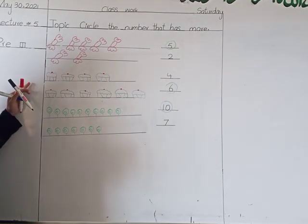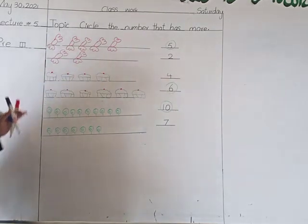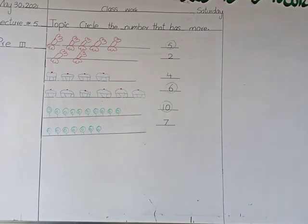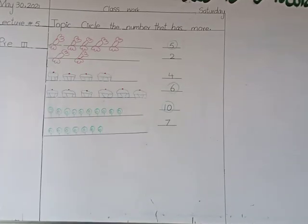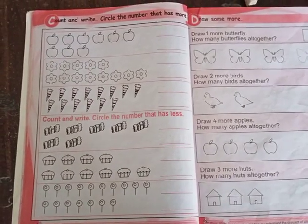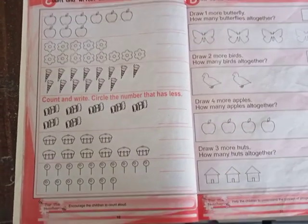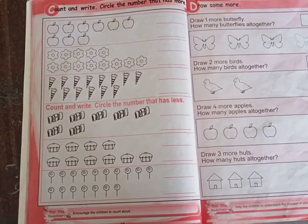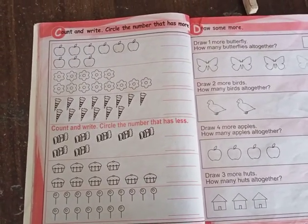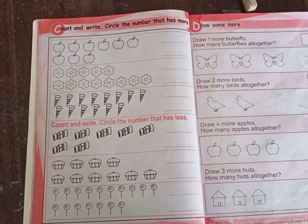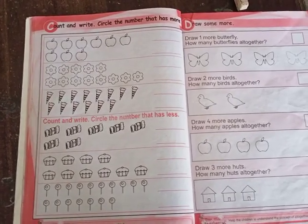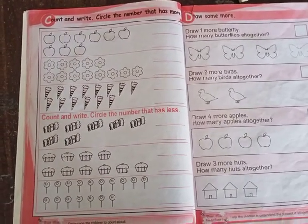This is our today's topic. We have learned about circling the number that has less and the number that has more. Students, page number ten is homework in your book. You have to complete this page and send it to your teachers in the group. That's all. Allah Hafiz, students. Stay blessed.